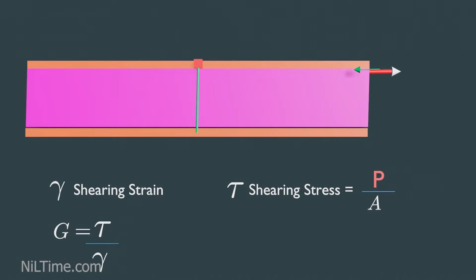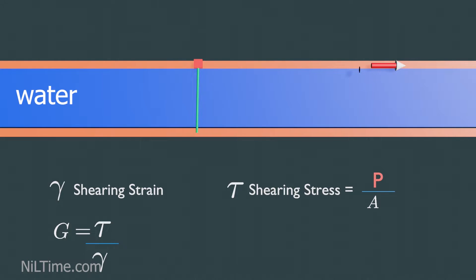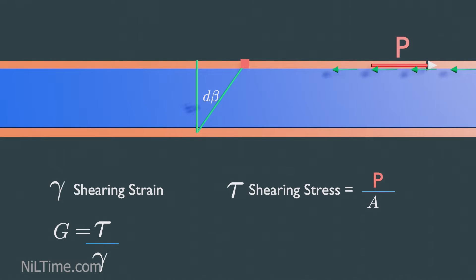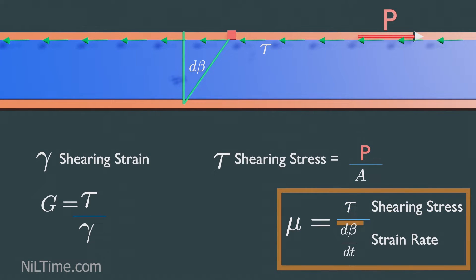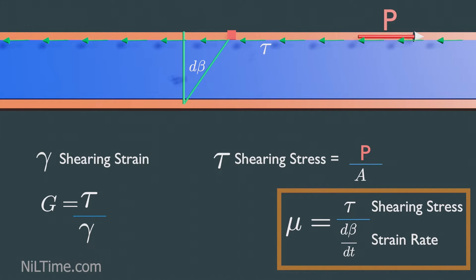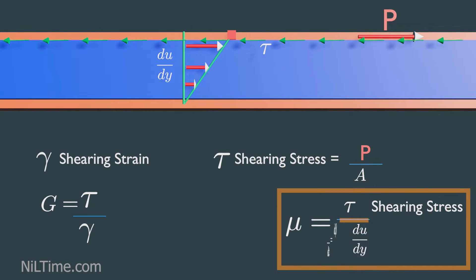Now, what will happen if this steel is replaced with water and the force is applied to the upper plate, keeping the lower plate fixed? In this case, the water will of course deform with a certain angle, and also shear stress will develop. Just like modulus of rigidity for solids, there is viscosity for fluids. Similar to modulus of rigidity, viscosity is the ratio of shear stress to strain rate. Strain rate is the change in strain or deformation of a material with respect to time. As time passes, the fluid deforms. Later in this video you will see that the rate of deformation of a fluid element is equivalent to the velocity gradient. So you can write viscosity as the ratio of shear stress upon velocity gradient.